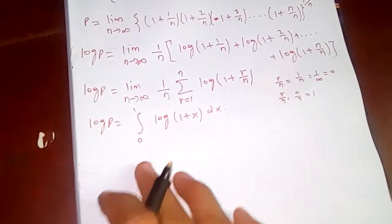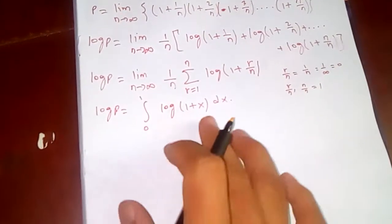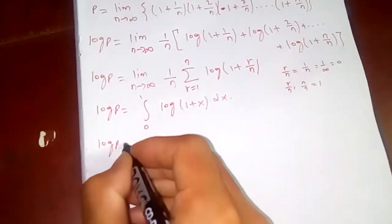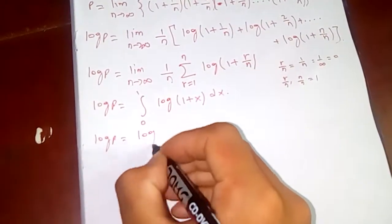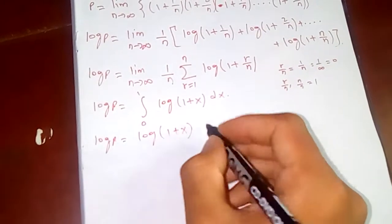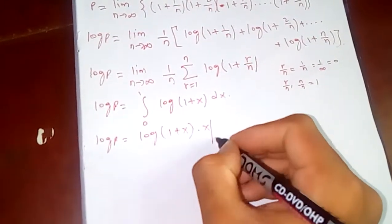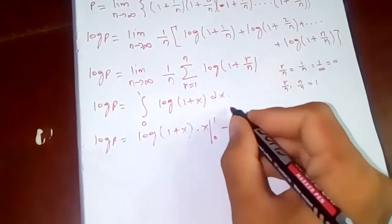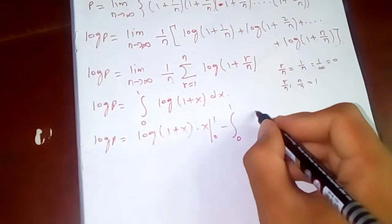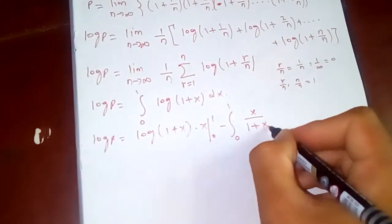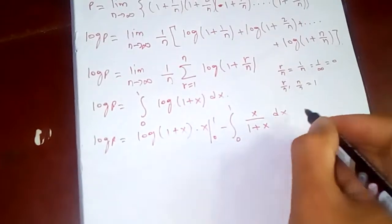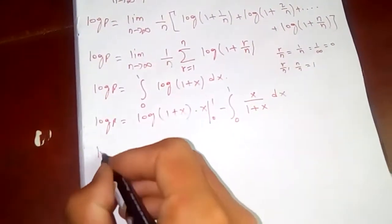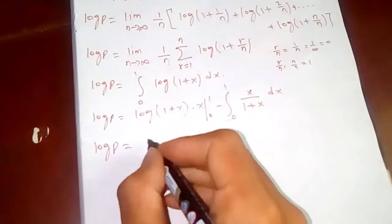Now this is easy to evaluate using integration by parts. We get log of one plus x times x, evaluated from zero to one, minus the integral from zero to one of x over one plus x dx.